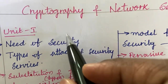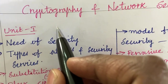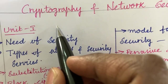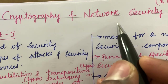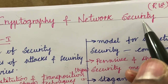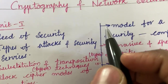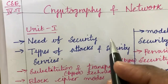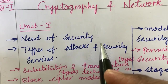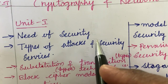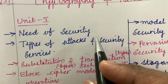Welcome back students. In this video, I am going to cover a few important questions and short questions for the course Cryptography and Network Security under JN2U R18 Regulation for Computer Science Engineering Students. As you all know, the question paper pattern has been changed — it is all about Part A as well as Part B.